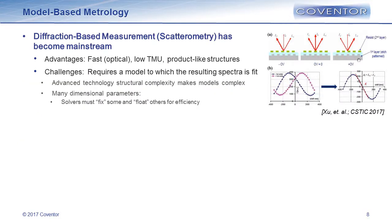Starting with metrology — model-based metrology is actually becoming mainstream. The example I use here is diffraction-based measurement, or scatterometry, sometimes referred to as OCD. The advantage is it's optical, so it's very fast with very low total measurement uncertainty, and you can use this to measure product-like structures. The challenge is: you shine light across the grating, measure the spectra, and you need a model to fit that spectra and determine what the geometry is on the wafer. The model becomes the challenge, and advanced technologies with a lot of structural complexity make those models very difficult.